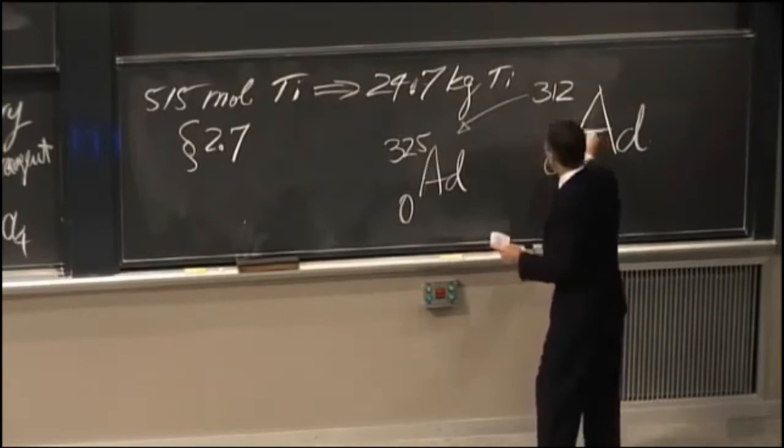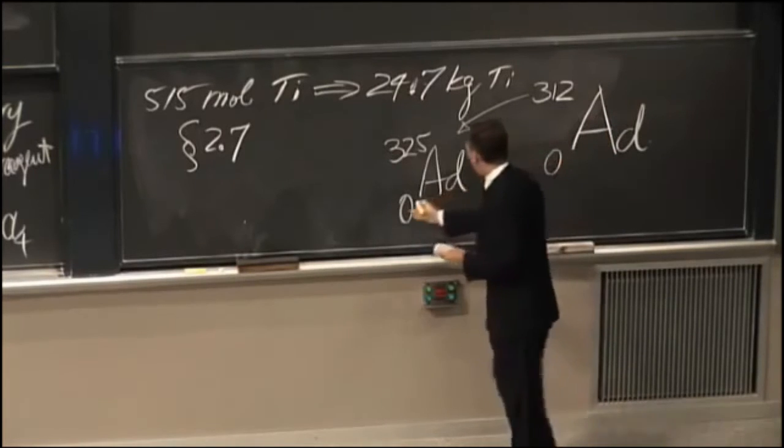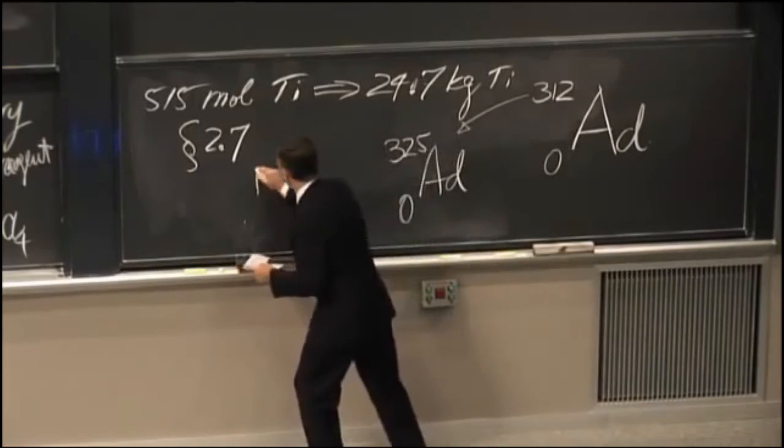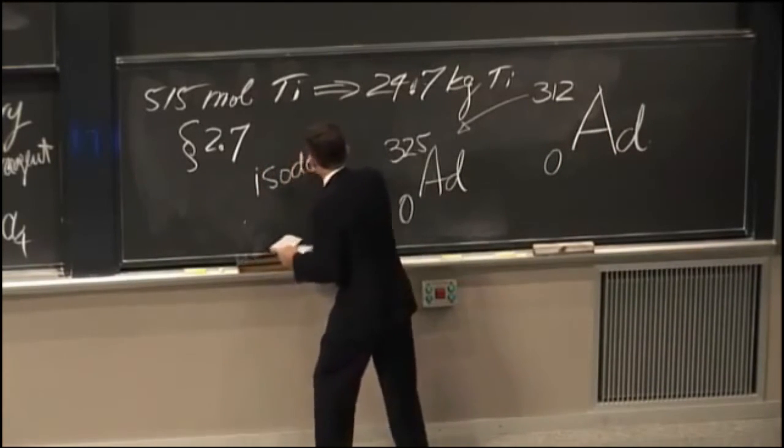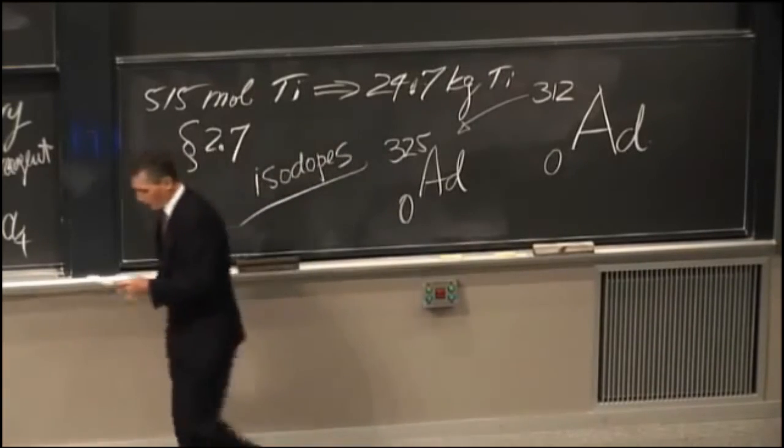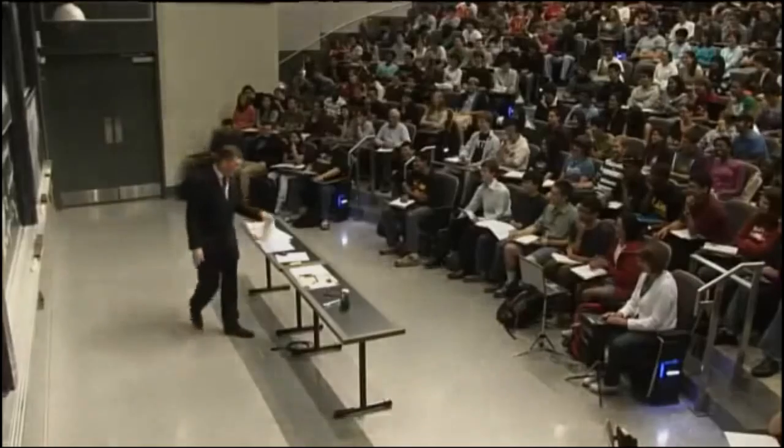So if they occupy the same place, they have the same proton number, but a different neutron number. In the case of administratium, they're called isodomes. So with that, I will say, have a good weekend.